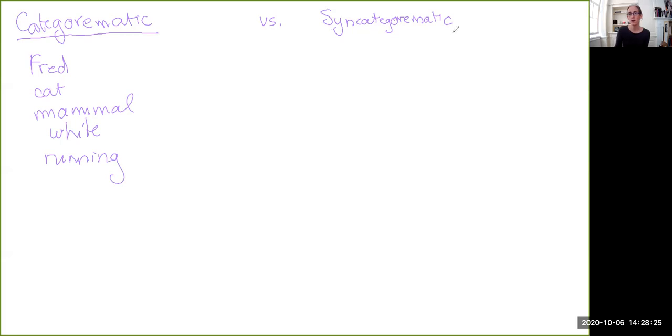The syncategorematic ones are basically all of the other sorts of words. Words that you can't really explain what they mean without having some kind of context that they go. So prepositions, quantifiers, negation, conjunction. All of these sorts of things are syncategorematic. Later on we will talk about a distinction between the logical vocabulary of the language and the non-logical and it will turn out to be the case that the logical vocabulary of a language generally tends to be the syncategorematic terms. And the non-logical are the categorematic. So just keep this in mind for the future.